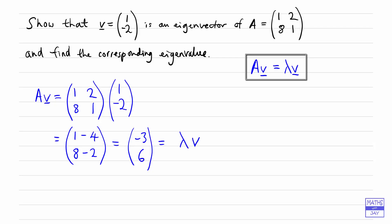And remember we're trying to write that as lambda times V, which of course is something or rather times (1, -2). And we can see that there is a value lambda that works there. So we want minus 3 to be lambda times 1, and 6 to be lambda times negative 2, so lambda must be negative 3.